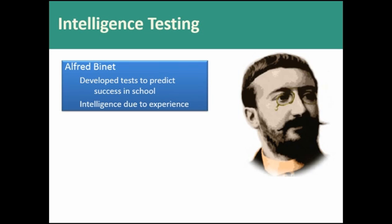The French government was advocating that kids start school when they had a mental age that made them ready, rather than just throwing them in school when they reached a particular chronological age. So the purpose of the test was simply to determine who was ready to enter school and who needed maybe a year of exposure to certain kinds of information that they obviously hadn't encountered yet in their lives. Most of the test takers would be four, five, or six-year-old children getting ready to start their first year of school.